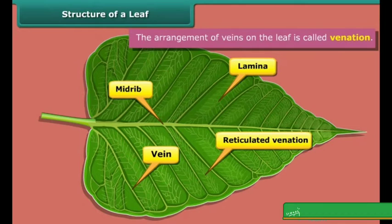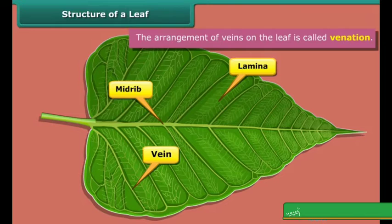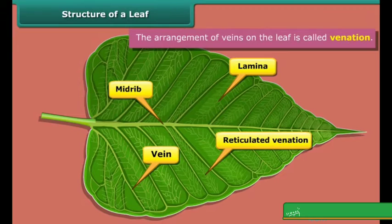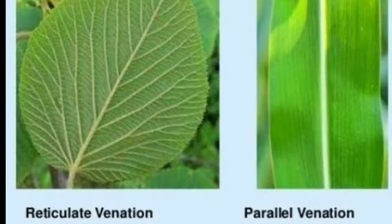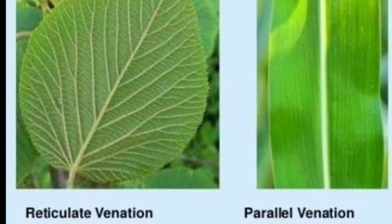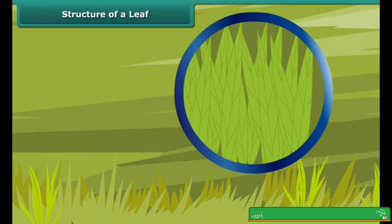The design made by veins in the leaf is called leaf venation. If the design is net-like on both sides of the midrib, it is called reticular venation. On rose plants or coriander plants, we can observe this kind of reticular venation. If the design made by veins is parallel to one another, it is called parallel venation. You can observe this in case of grass, wheat, maize, and other plant leaves.